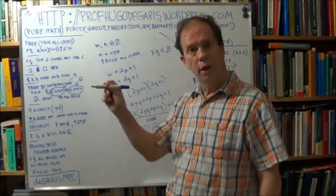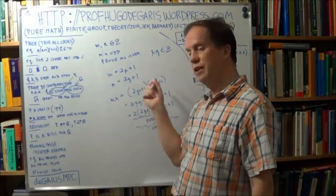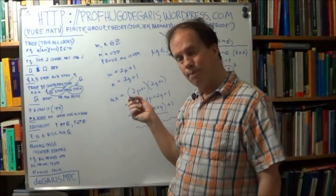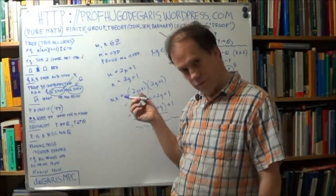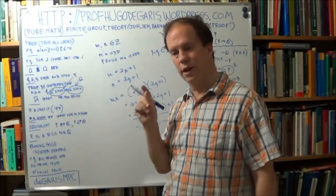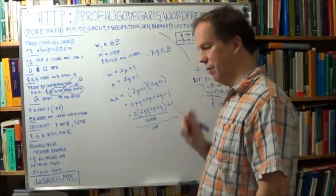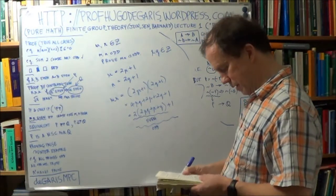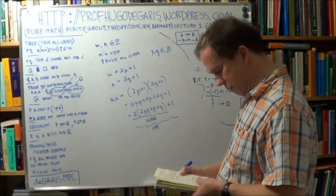And we only have to go one way because we're not asked, this is not an if and only if or a necessary and sufficient condition type proof. It's just a one way. You're only asked to prove it in one direction. So that's done. That was pretty easy.